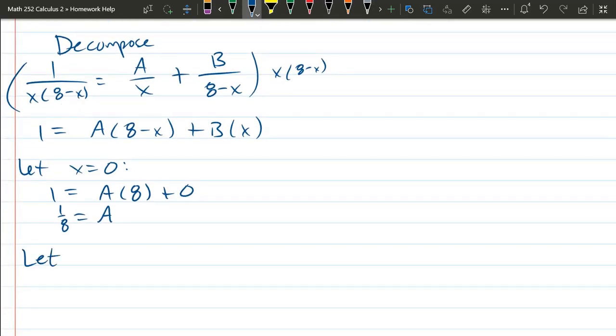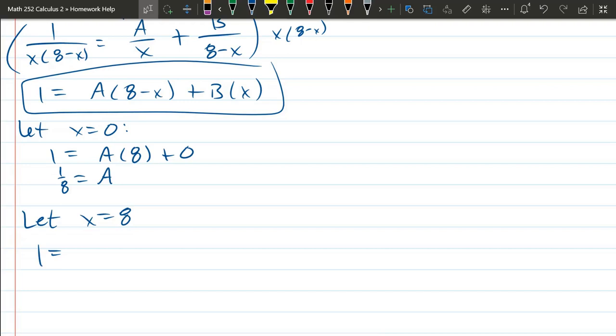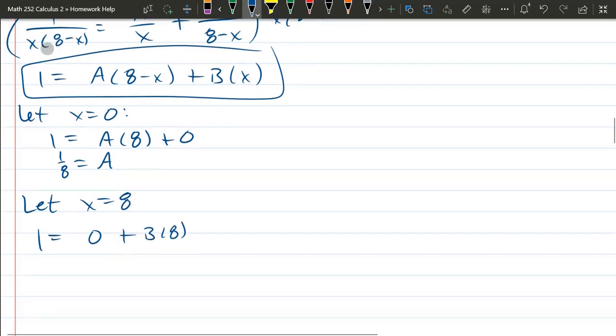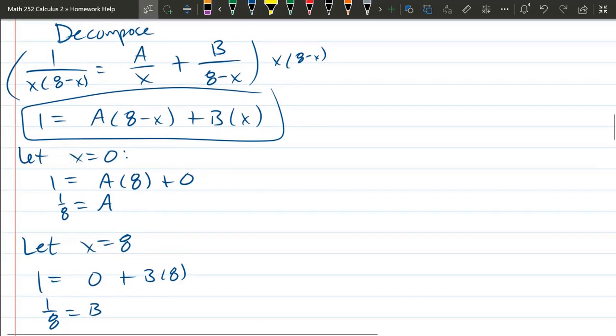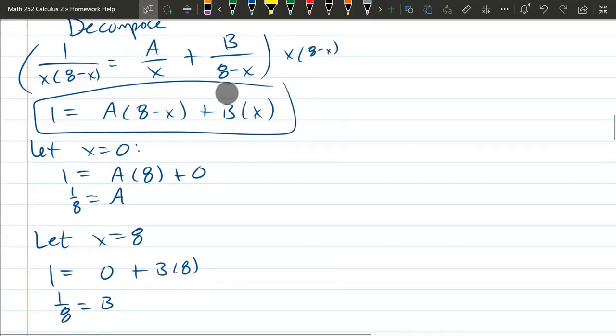Now, to get b, you could plug this a value back in, but we can get b very easily. We're going to use another x value, and that x value will be 8. We'll let x equal 8. And I'm copying, again, this right here. Except I'm just replacing x by 8. Remember, sometimes you get an x on the left side, and you've got to make sure you plug in the x value everywhere you see x. So x is 8. We have a times 0 is 0 plus b times 8. Look at this. We get another 1 eighth for b.